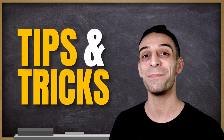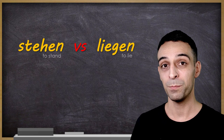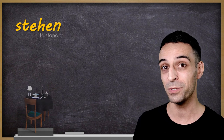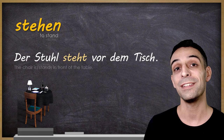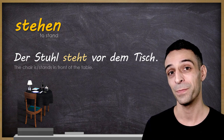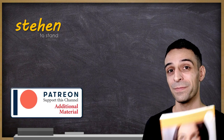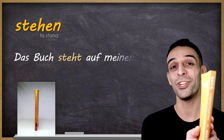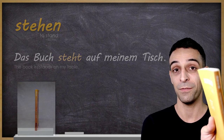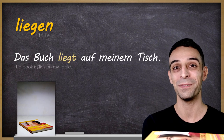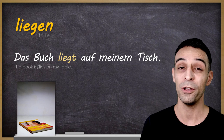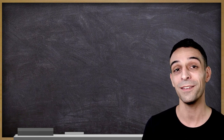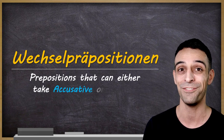Bonus tip: die Verben stehen und liegen. Both are used with prepositions and you will need dative case. As long as something has legs or feet, like a chair, it's easy: Der Stuhl steht vor dem Tisch. But for something without legs, like a book — if it's in an upright vertical position, use stehen: Das Buch steht auf meinem Tisch. If it's lying flat: Das Buch liegt auf meinem Tisch. Note that auf is a Wechselpräposition — it can use both accusative and dative.